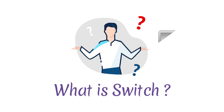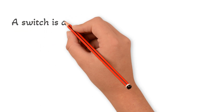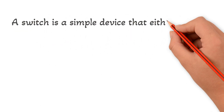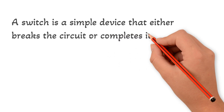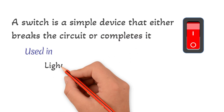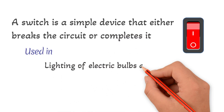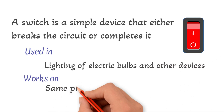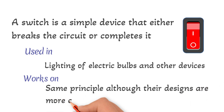A switch is a simple device that either breaks the circuit or completes it. The switches used in lighting of electric bulbs and other devices in homes work on the same principle, although their designs are more complex.